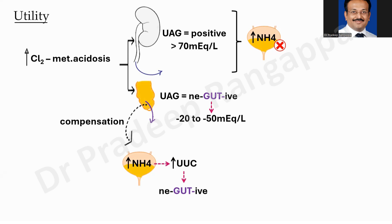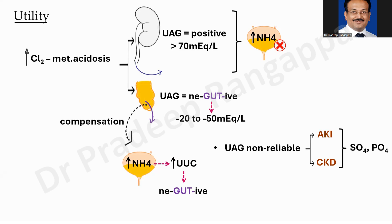For trainees: urine anion gap cannot be interpreted in two conditions — if the patient has AKI or CKD — because in those settings the acidosis is predominantly contributed by sulfates and phosphates, not by unmeasured anions or cations. So in AKI and CKD, the urine anion gap becomes unreliable and we need to bear this in mind.